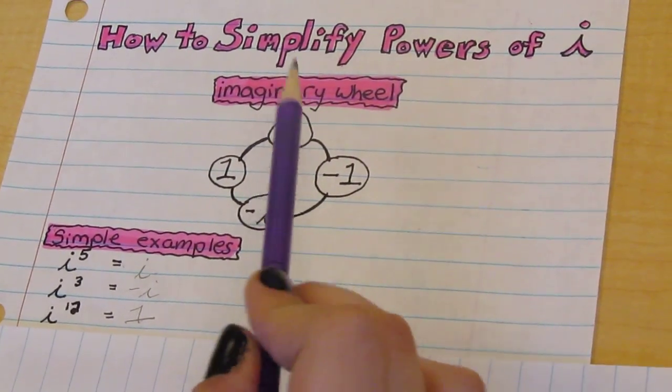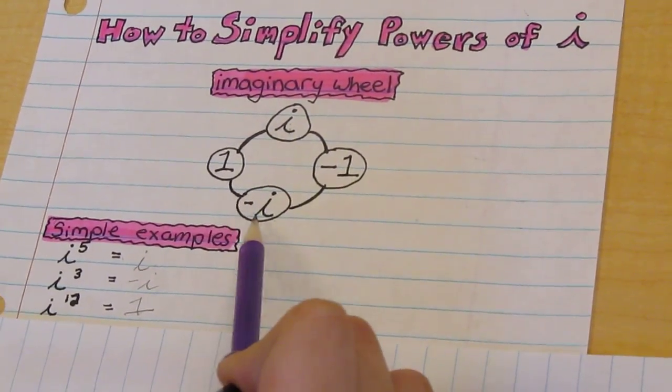These are the only four answers you can ever get: i, negative one, negative i, and one.